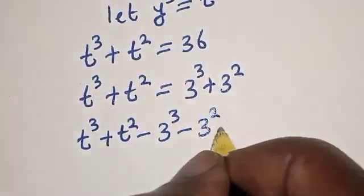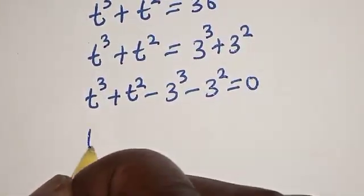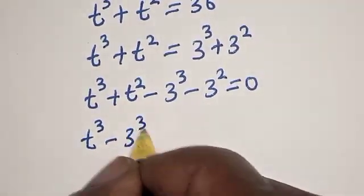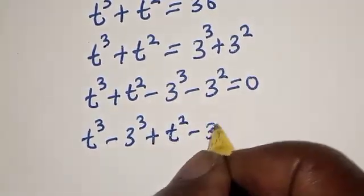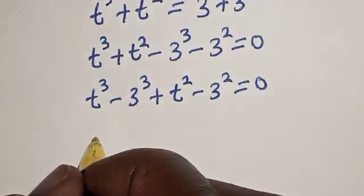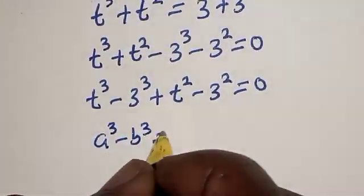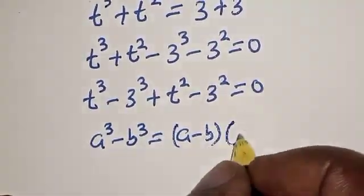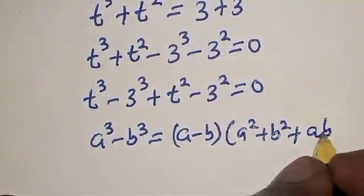So we have t cubed plus t squared minus t cubed minus 9 is equal to 0. Now remember this rule: a raised to power 3 minus b raised to power 3 is equal to a minus b multiplied by a squared plus b squared plus ab.